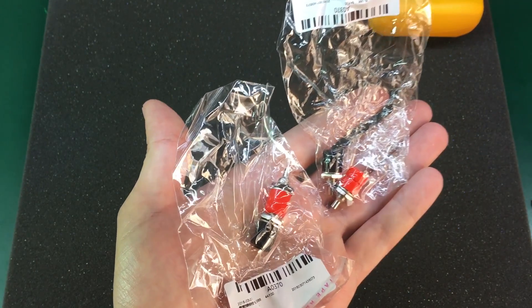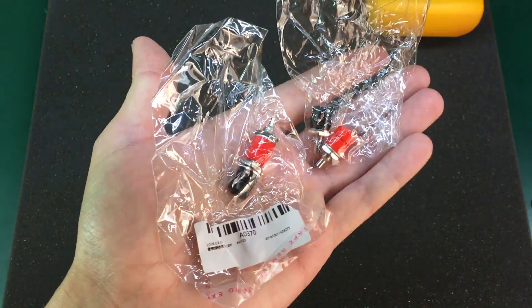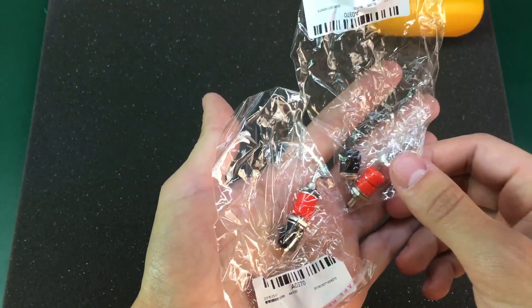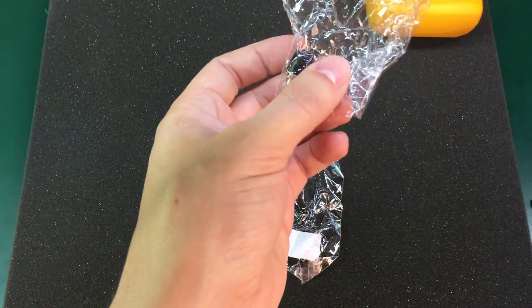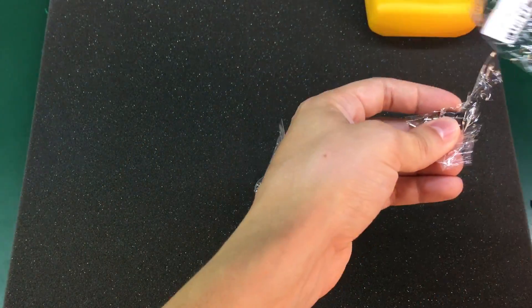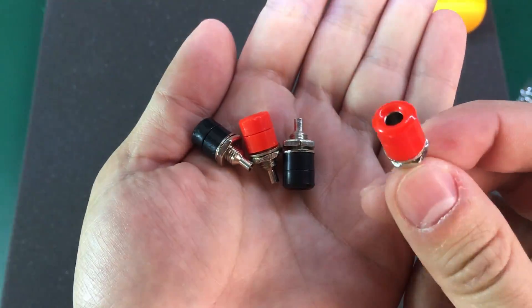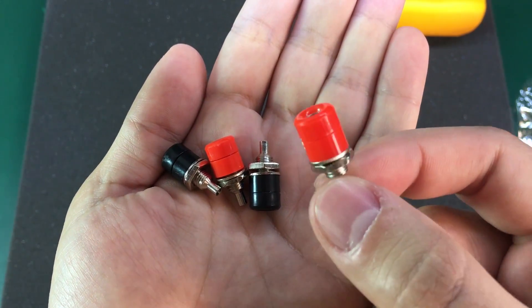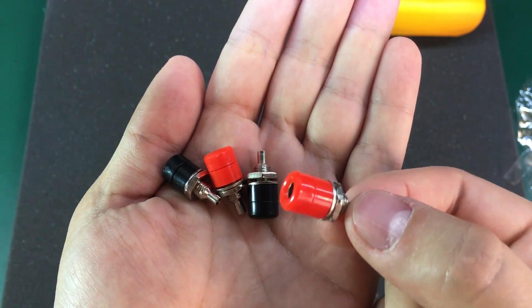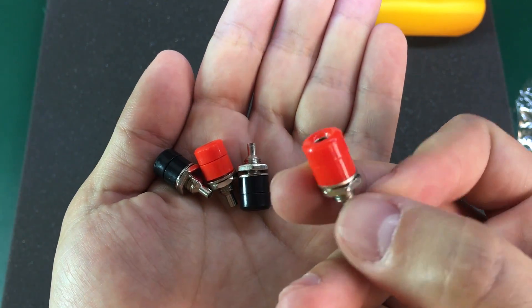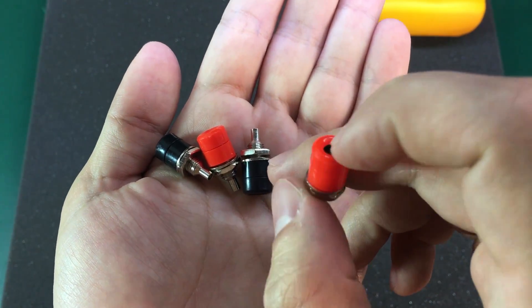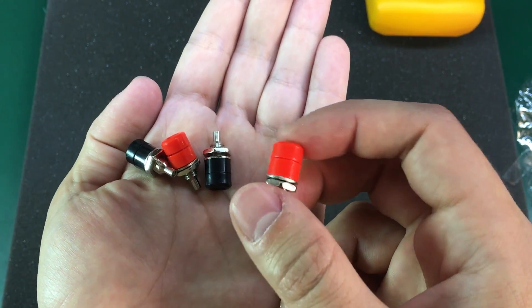These are 4mm binding posts and these can also be found in a bunch of different variants on eBay and other websites. I didn't have this particular model and let me show you what I'm talking about. These are lower profile than the usual binding posts and they might come in handy in some front panel where there is a space constraint and I don't have a lot of room to install binding posts.